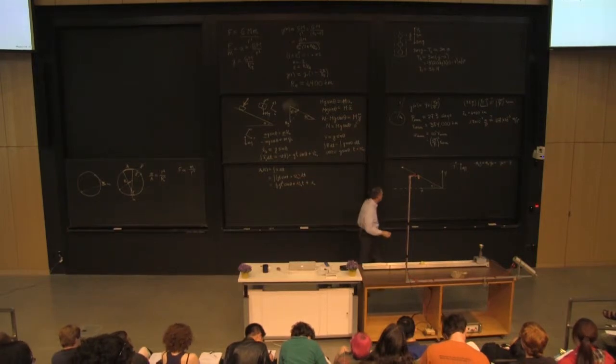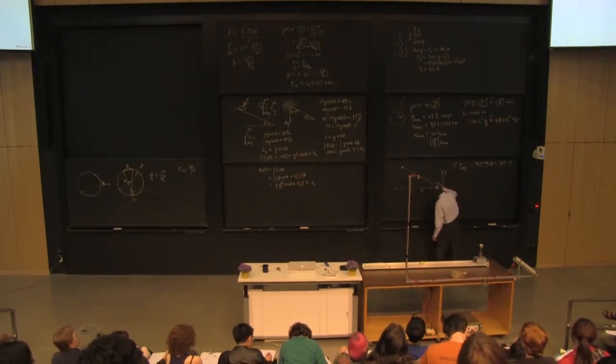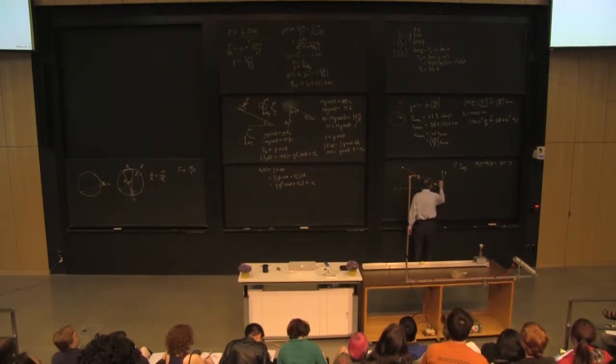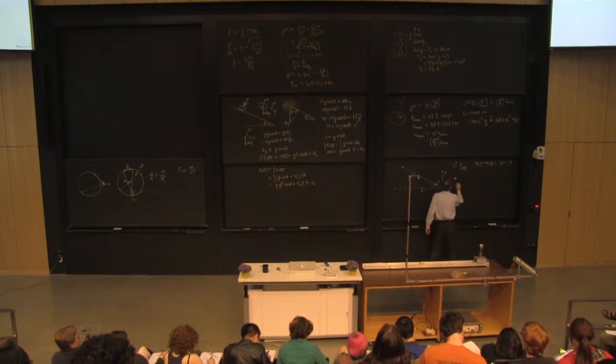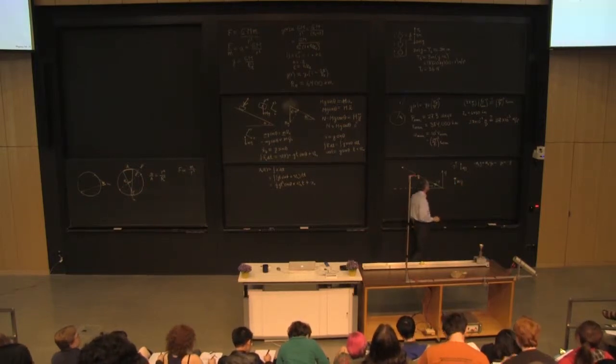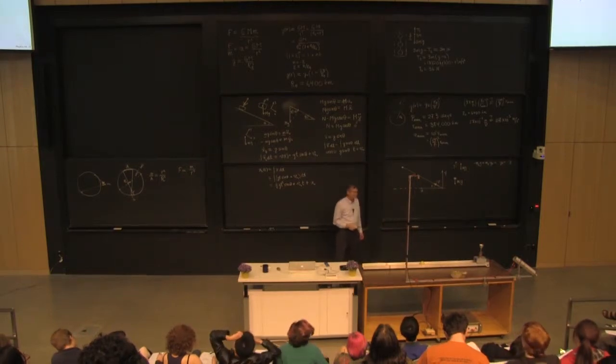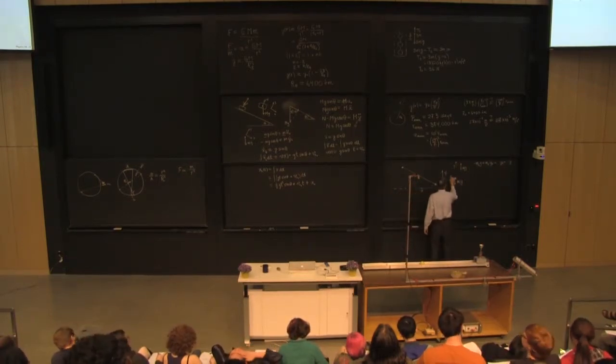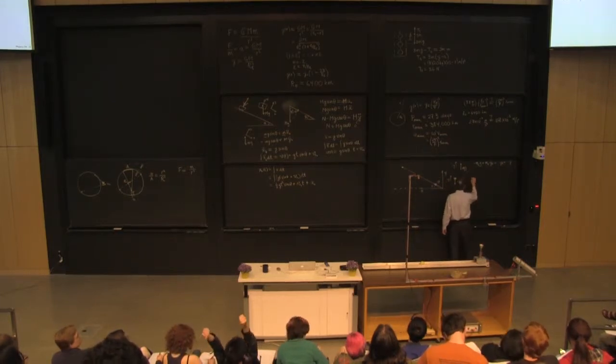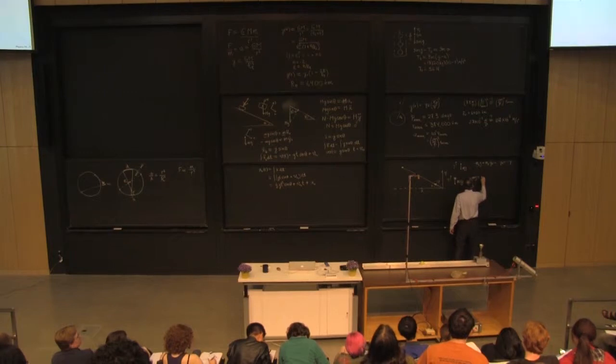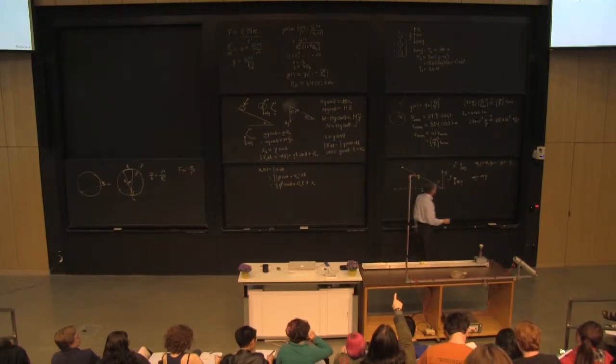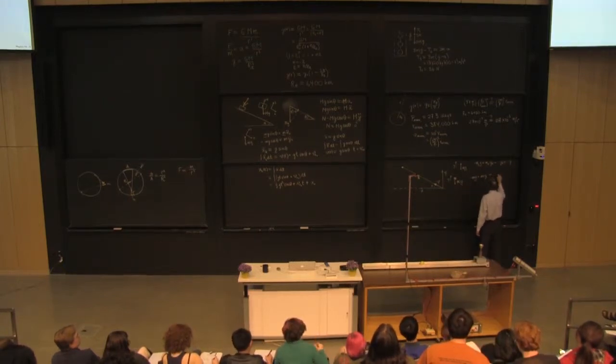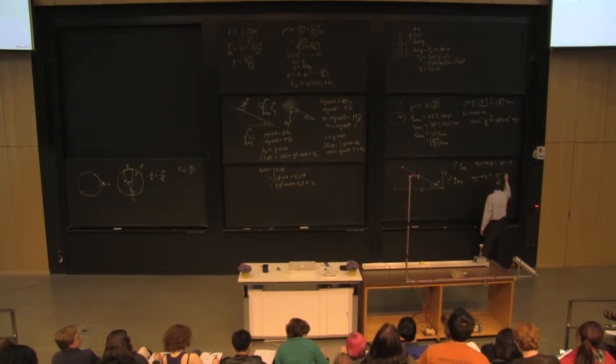Now how about the tennis ball? So the tennis ball gets launched with some velocity that way. If I isolate the tennis ball, it's the same. I just have gravity, mg. And I'm going to use the same positive direction up for my coordinate. So I get minus mg is equal to m y double dot, or y double dot is equal to minus g.